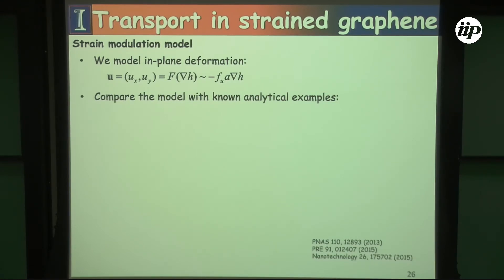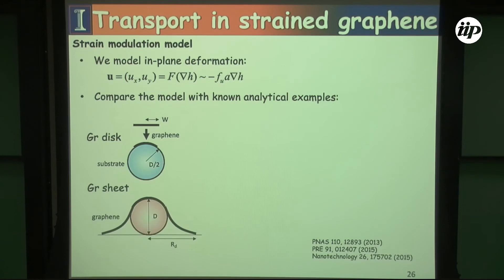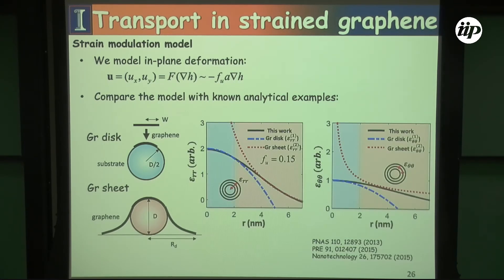We compared this with two known analytic examples: graphene spread over a nanoparticle as a small sheet, and a large sheet draped over a small sphere. Looking at the strain patterns between the two limits, this simple equation interpolates nicely in between — fitting the strain patterns for the graphene sheet and graphene disk quite nicely by tuning one parameter that tells us about the coupling between the disk and the graphene.